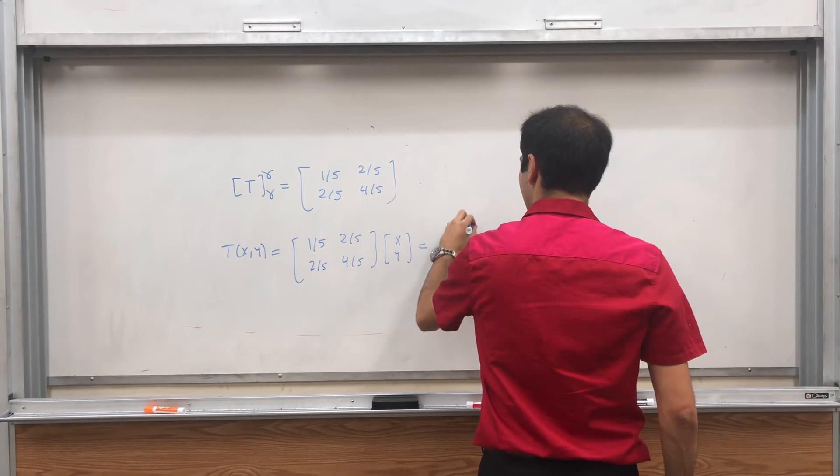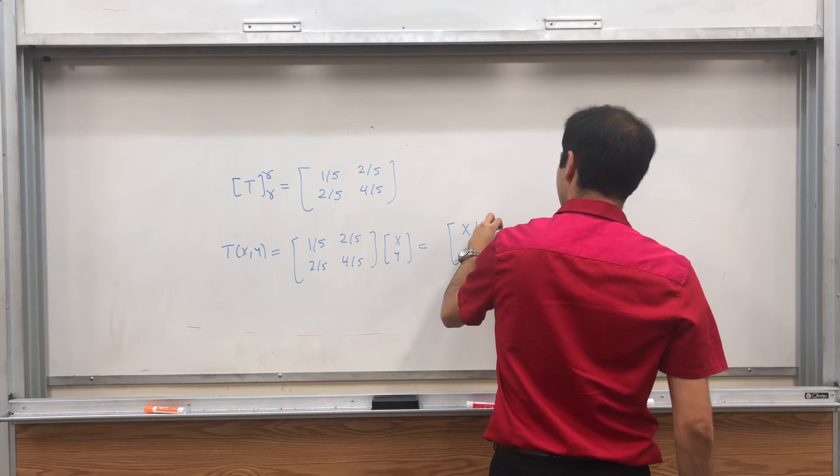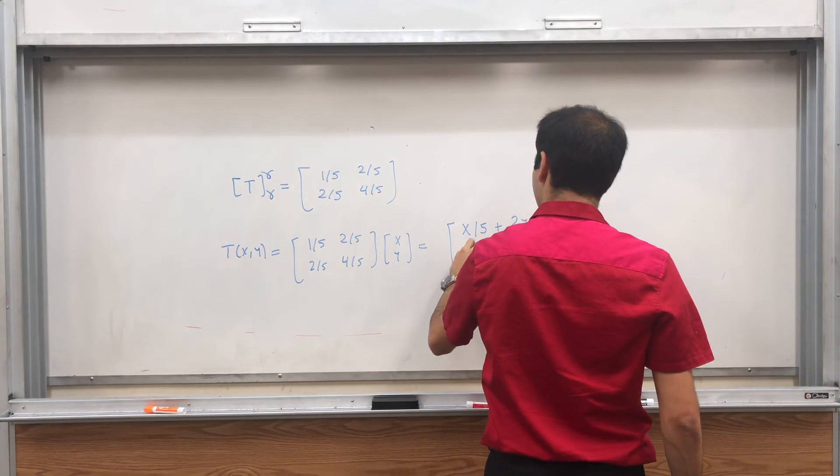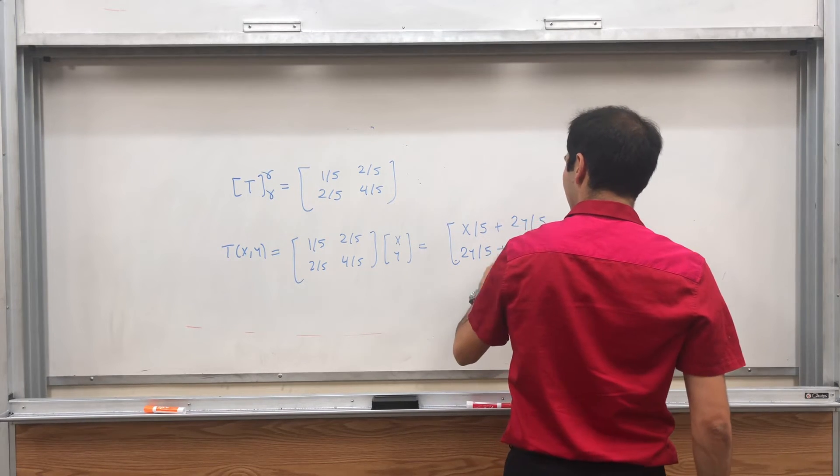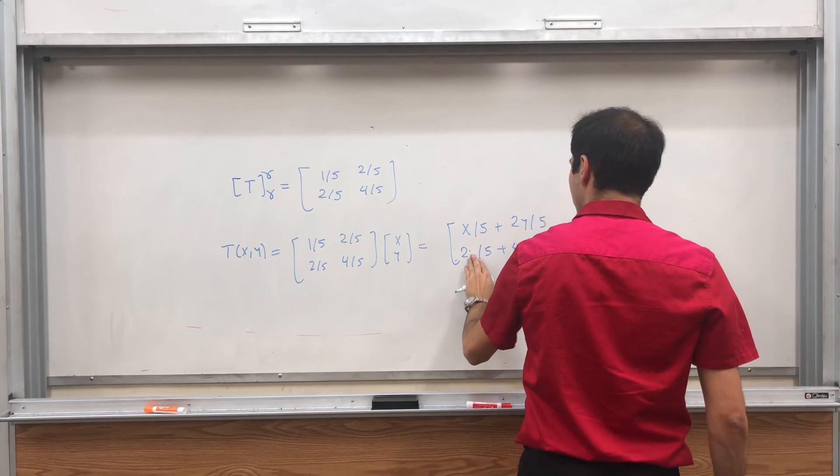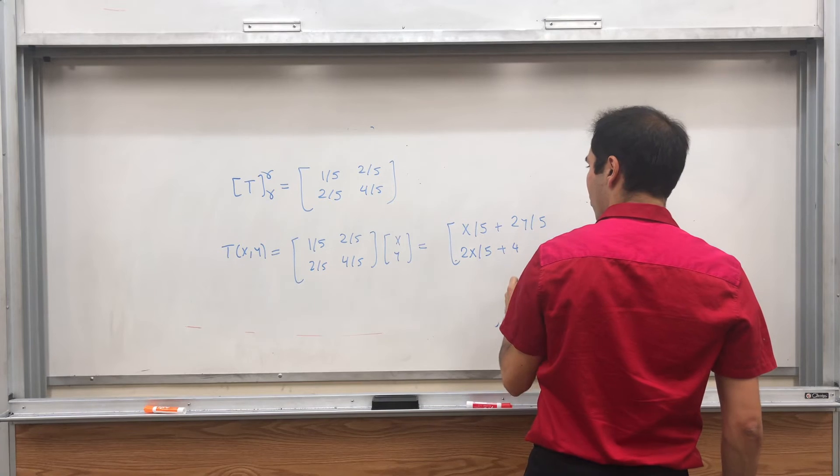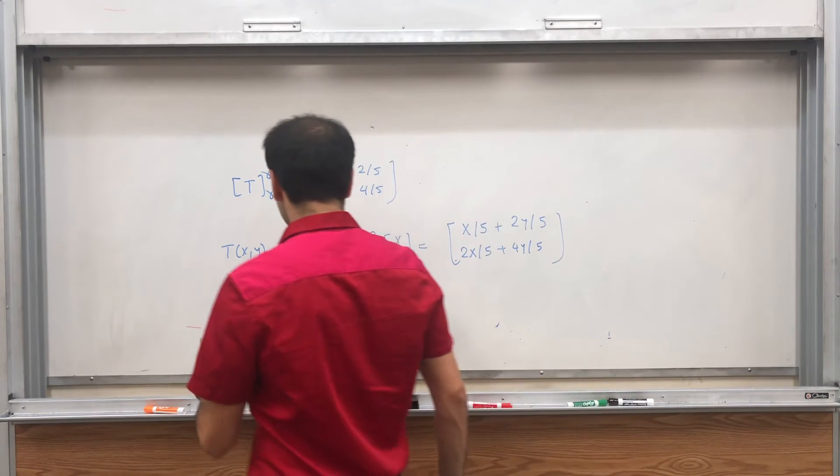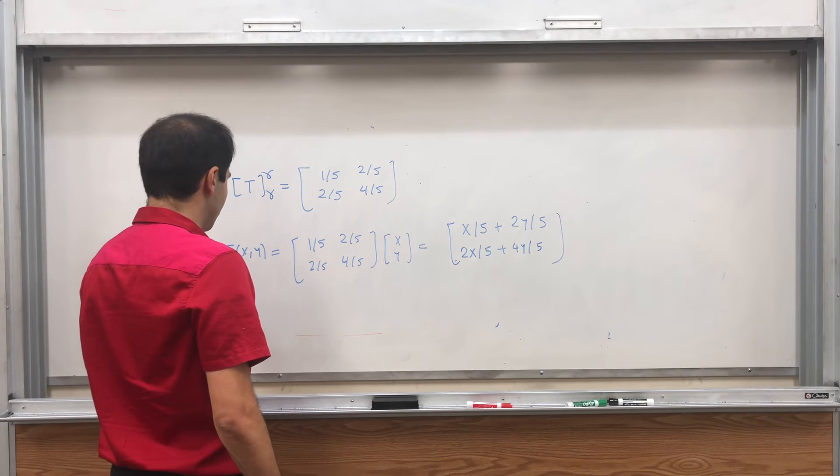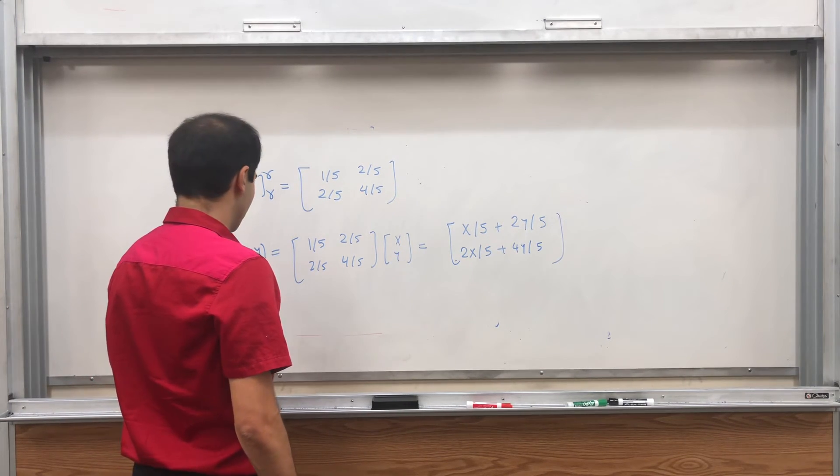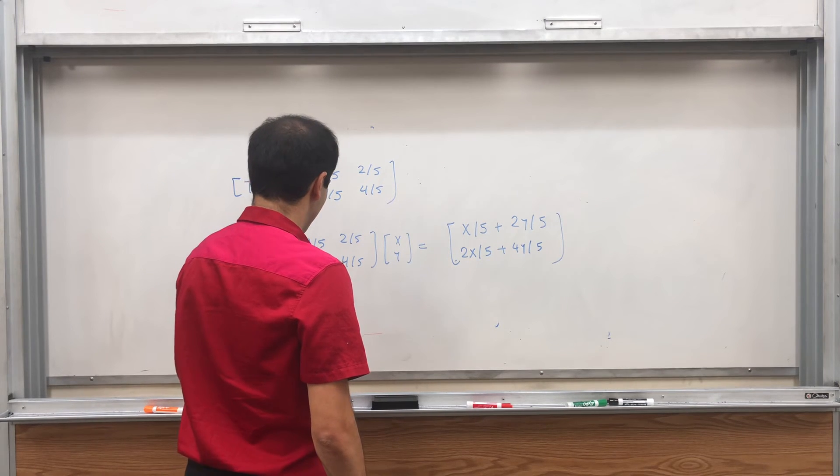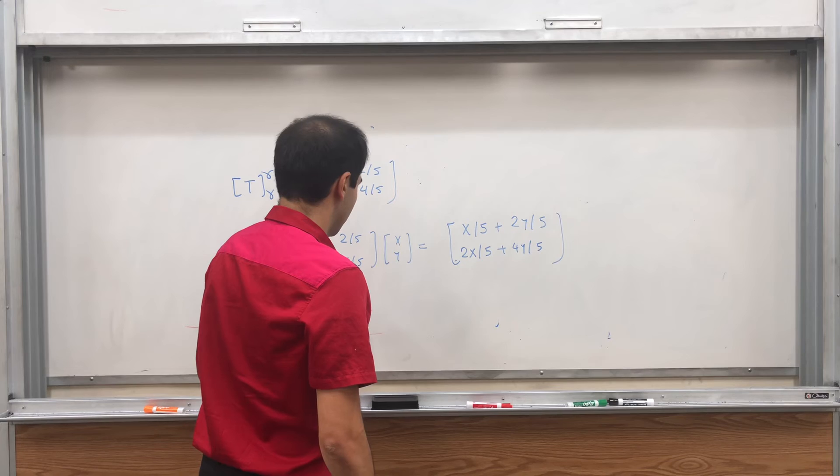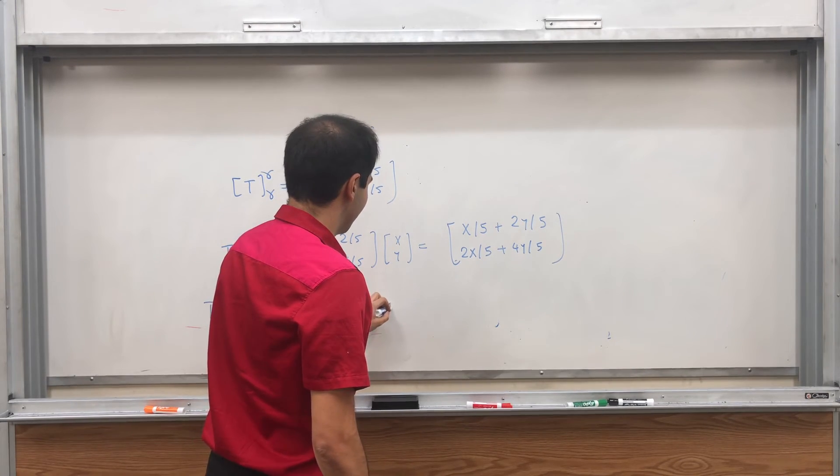x over 5 plus 2y over 5, and then 2x over 5 and then 4y over 5. And in other words, the formula for projection on this line is just x over 5 plus 2y over 5, 2x over 5 plus 4y over 5.